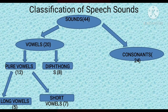These vowels are again classified into pure vowels and diphthongs. We have 12 pure vowels and 8 diphthongs. And these pure vowels are again classified into long vowels and short vowels. We have 5 long vowels and 7 short vowels.